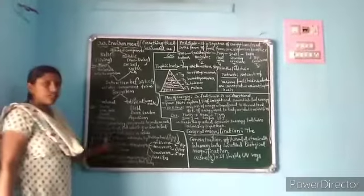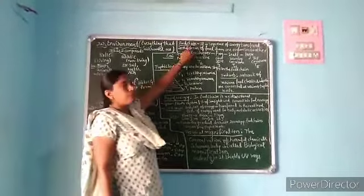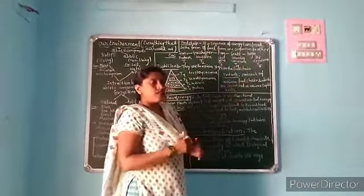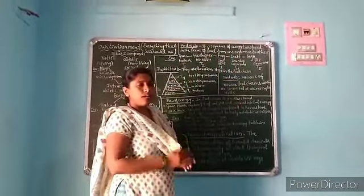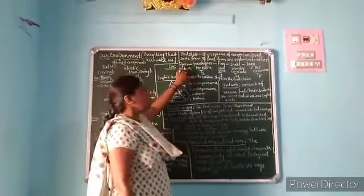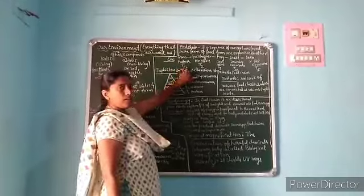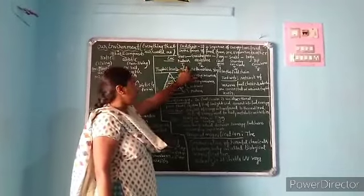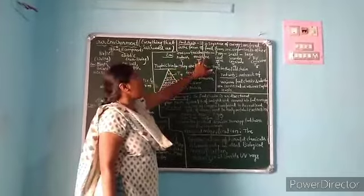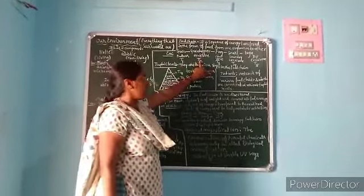The food chain is a sequence of energy transferred from one organism to another organism. Example: grass is T1 (trophic level 1) — producers. Grasshopper is herbivores, T2 (trophic level 2). Frog is carnivores, trophic level 3.